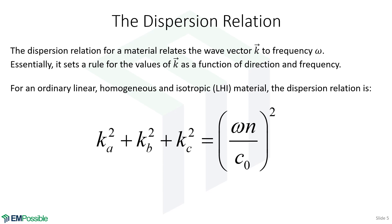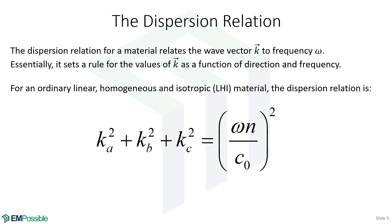It's really a rule that the wave vector has to follow depending on its direction — we can't choose any value of k and any direction simultaneously. Another way to write the same dispersion relation: we recognize that ω/c₀ is k₀, our free-space wave number. We bring terms to the left-hand side so we have k_a² + k_b² + k_c² divided by n², then subtract k₀² to equal zero. That's an alternate form, and we'll be writing other dispersion relations in a similar form.